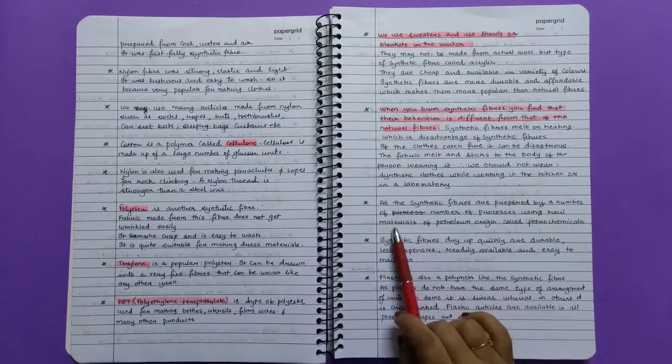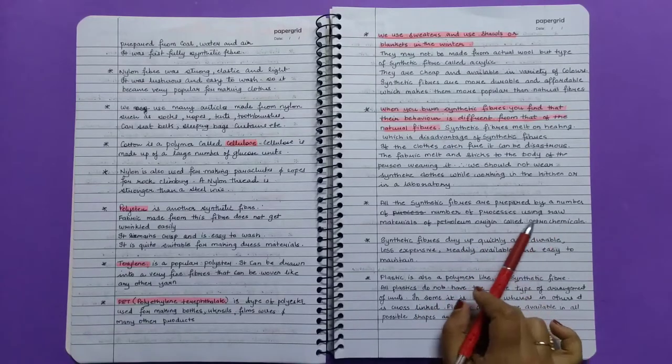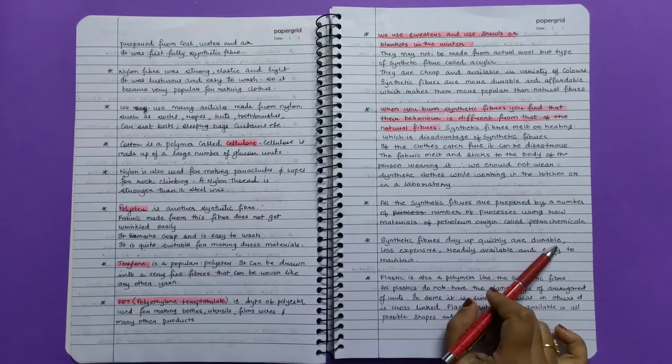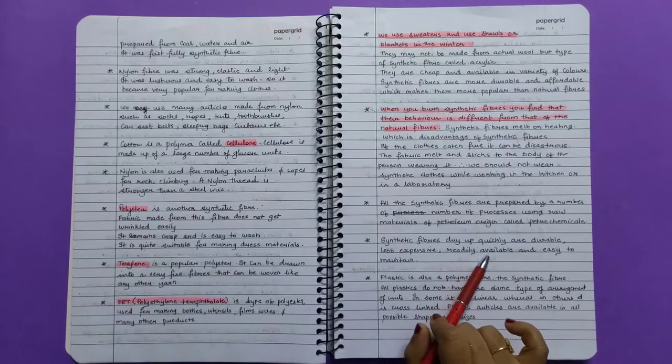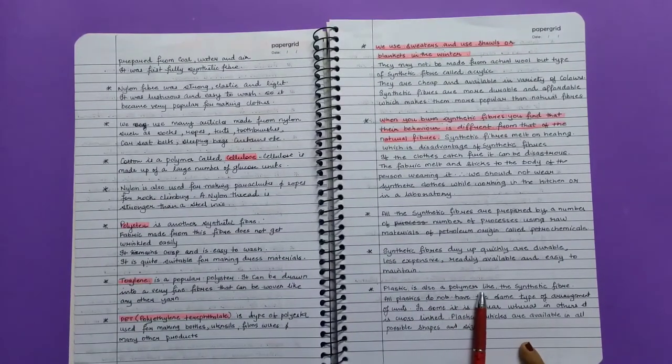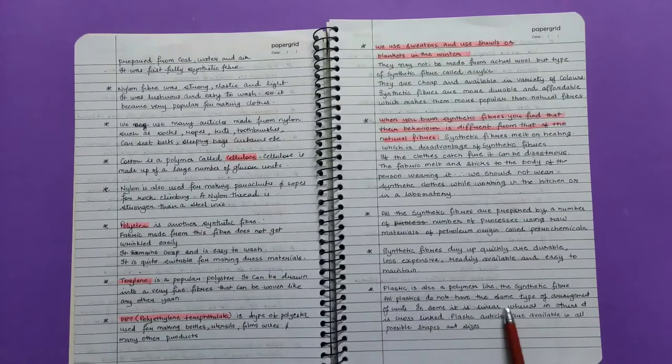All synthetic fibers are prepared by a number of processes using raw materials of petroleum origin called petrochemicals. Synthetic fibers dry up quickly and are durable, less expensive, readily available, and easy to maintain. Plastic is also a polymer like the synthetic fiber.